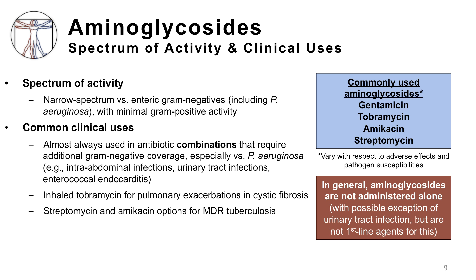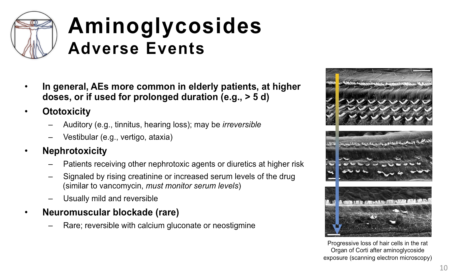Although the aminoglycosides have multiple potential clinical uses, their adverse effect profile has limited their widespread use, and they are not considered front-line therapy for these infections. Aminoglycoside-related adverse events are more common in elderly patients, when using higher doses, or if used for prolonged durations. Ototoxicity is particularly important because this effect might be irreversible, namely auditory or vestibular changes, including tinnitus, hearing loss, or vertigo. In the picture shown, a rat organ of Corti was affected with progressive loss of hair cells after exposure to aminoglycoside therapy, and a similar effect may occur in humans.